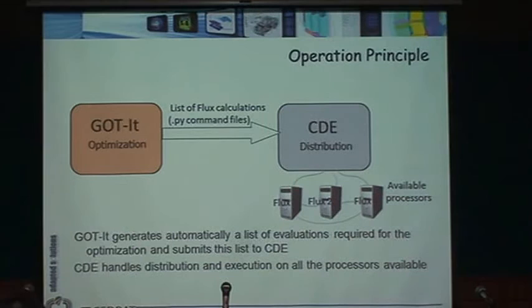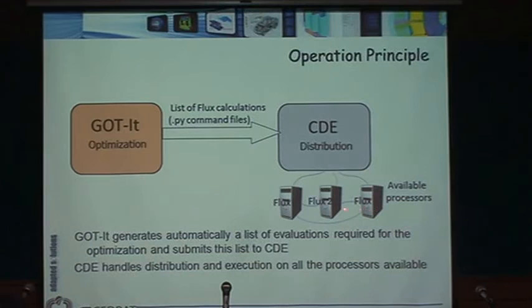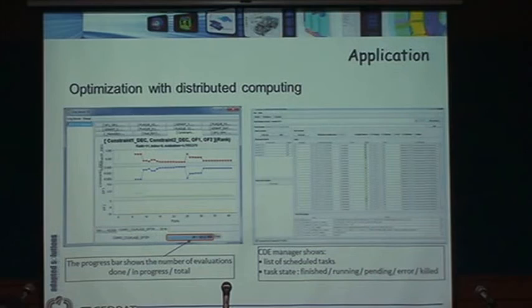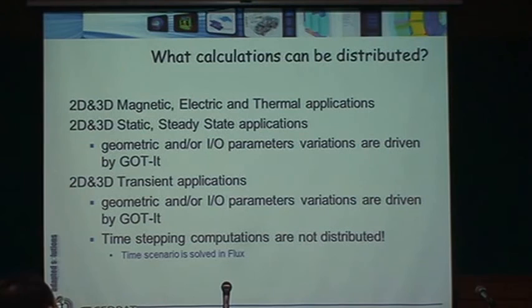Godit is the controller of the distributed system. It identifies all the computations needed and sends the list to a master node. The master node knows it has, say, 200 computations to do, looks on the network for authorized machines, distributes the work, manages the results, and once everything is done sends all the information back to Godit ready to use. You can monitor progress bars for the different cores and see how each solution is progressing.